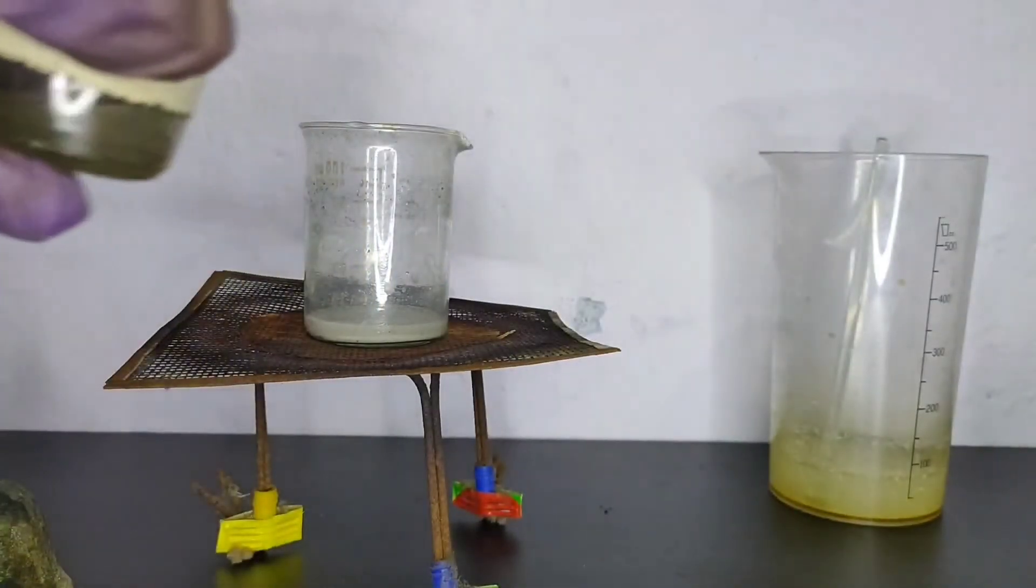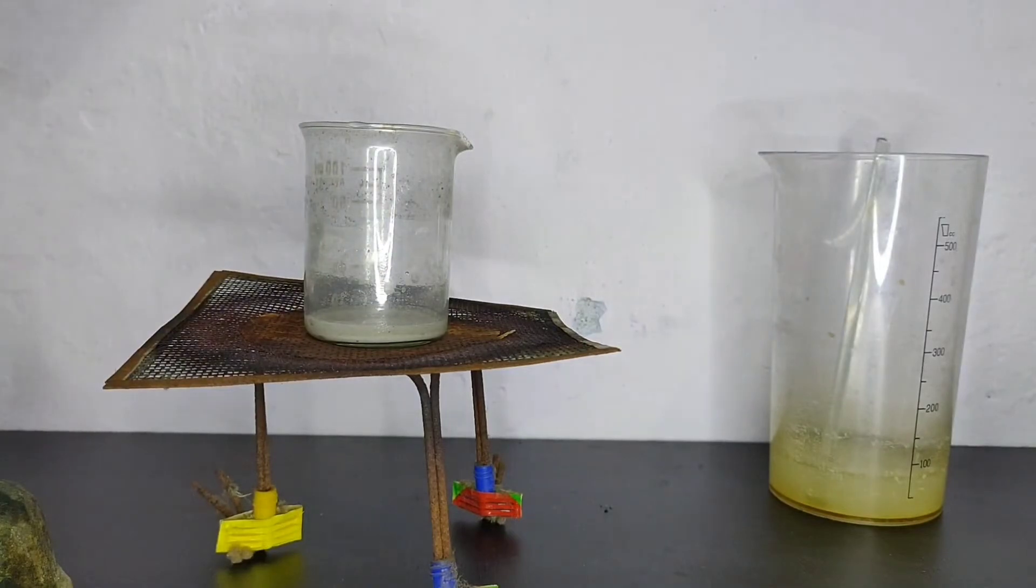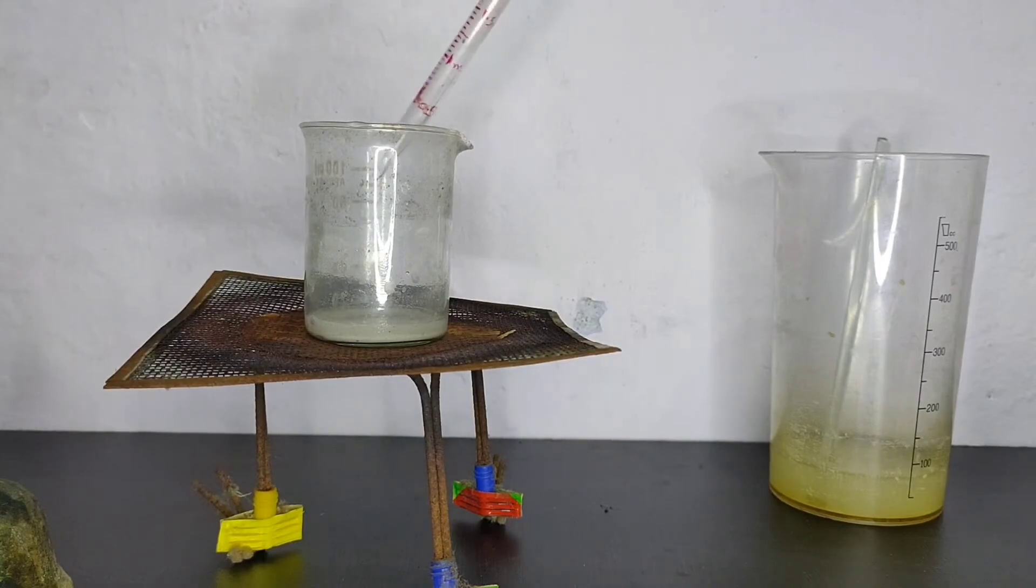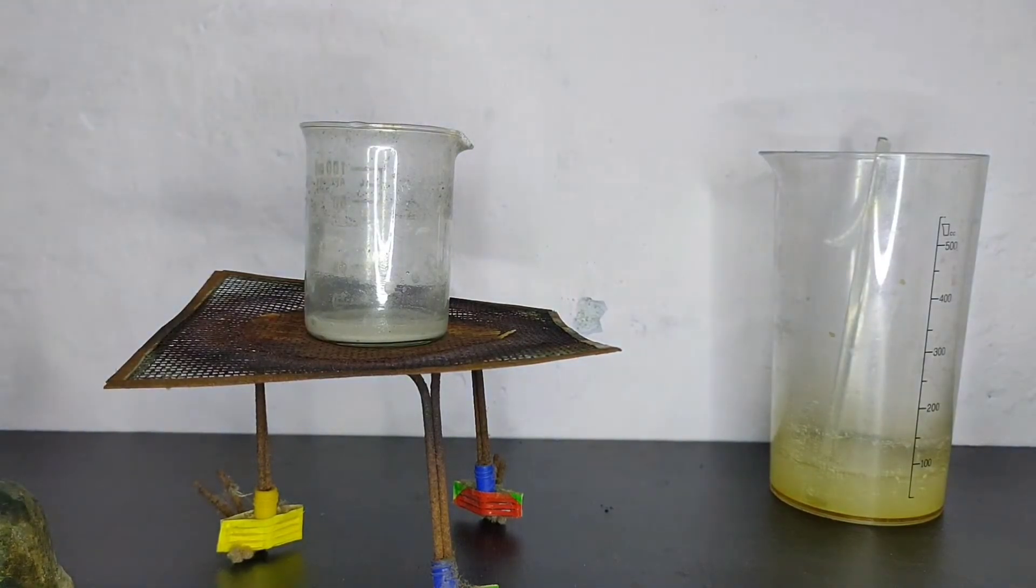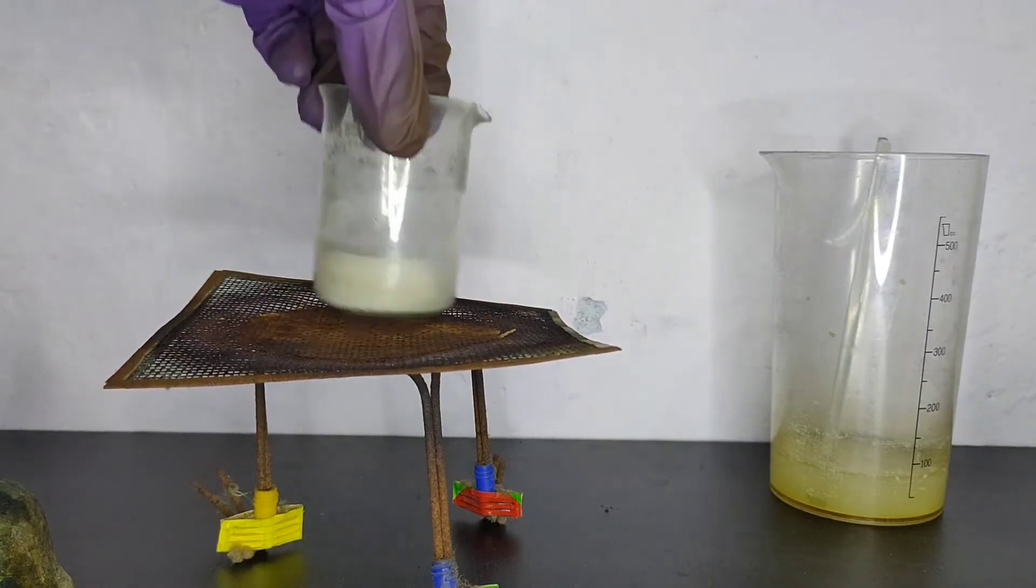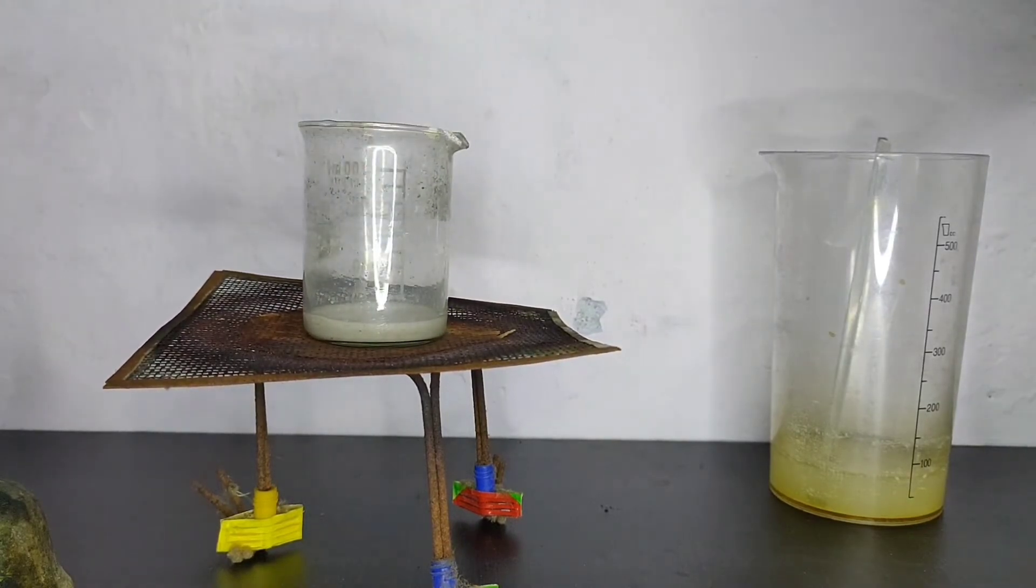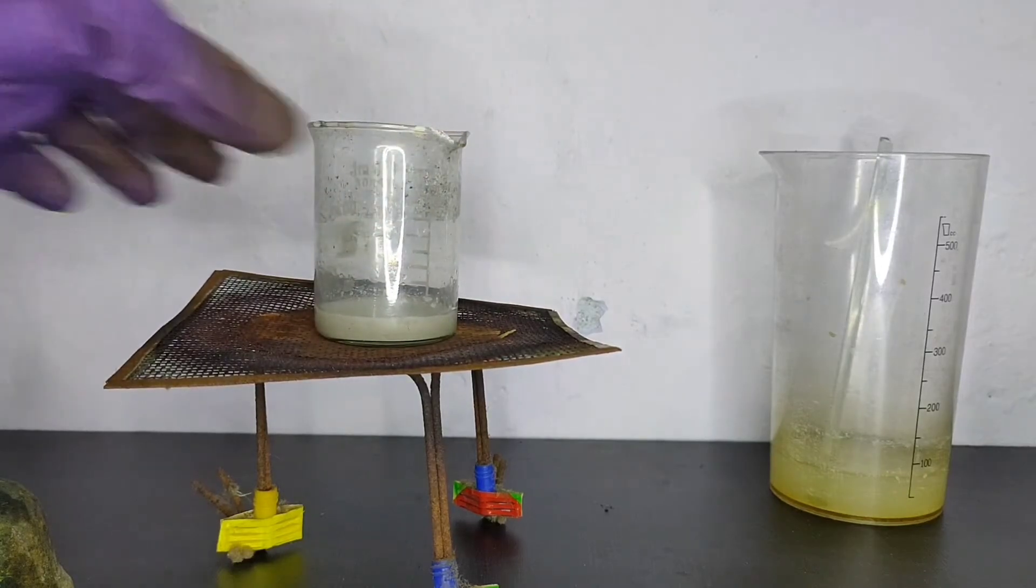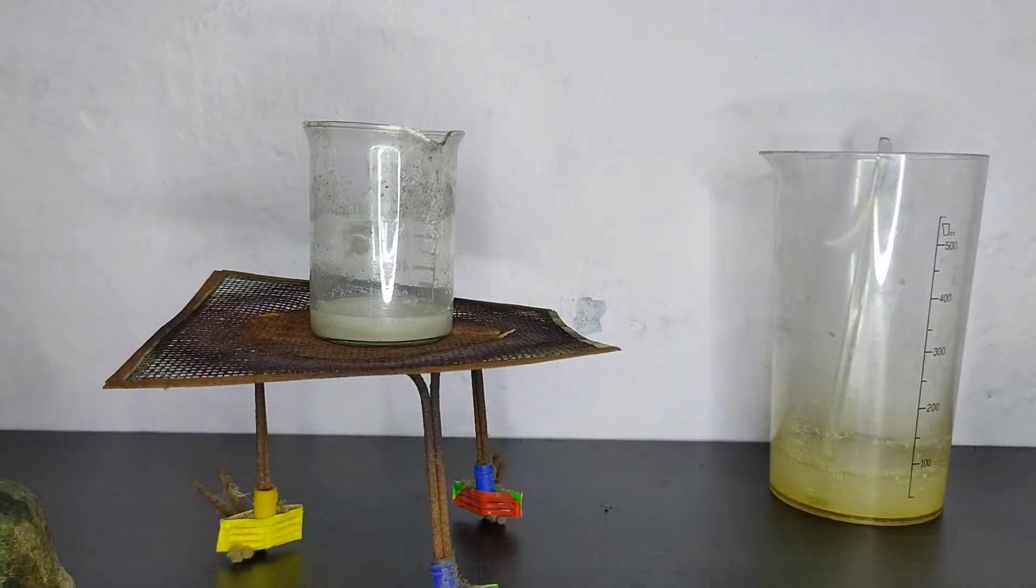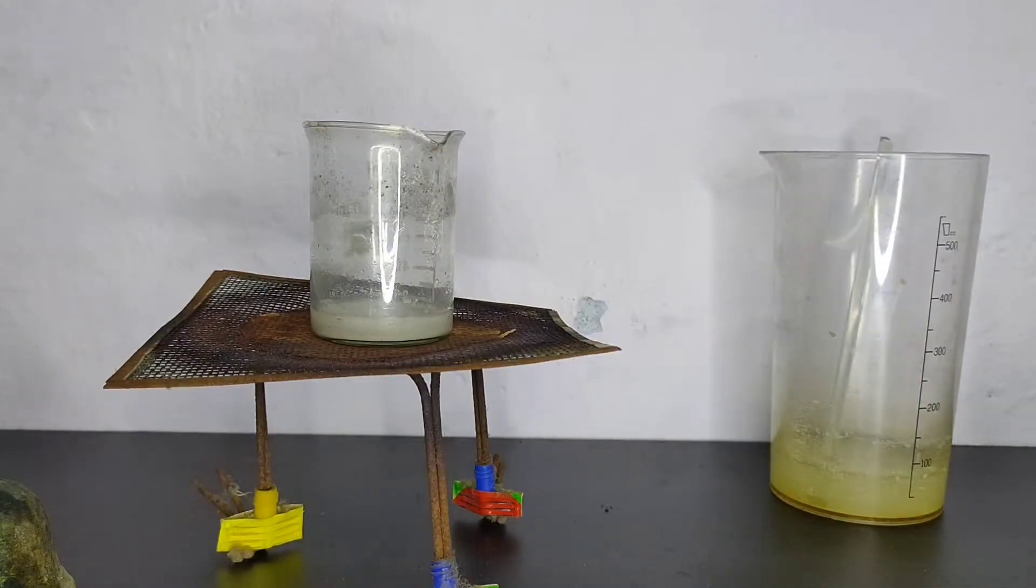And again I added some glacial acetic acid. Even on adding so much acetic acid nothing cleared up. I again added distilled water, but still the solution remained turbid and the precipitate did not dissolve. So I decided to heat this solution.